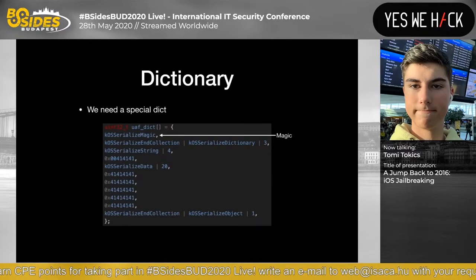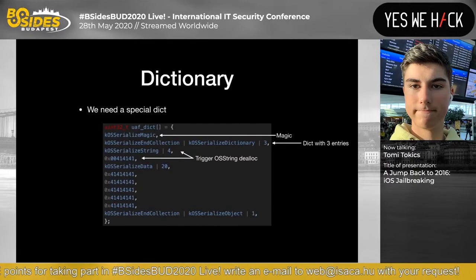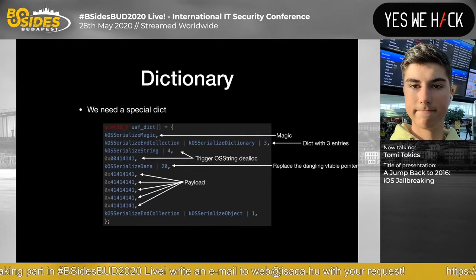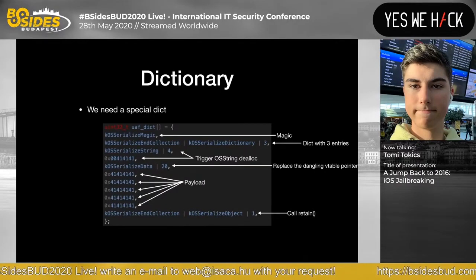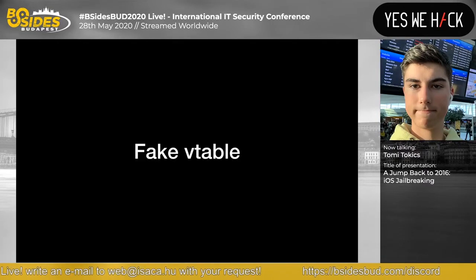The dictionary starts with the magic number, then three entries: first we trigger the OSString allocation by casting to another symbol, then we have the payload — where we replace the dangling vtable pointer with 0x41 bytes. We then call retain on the object. Once triggered, the kernel crashes trying to jump to an invalid address. Running it confirms the default address is 0x41, but we don't yet control the program counter.